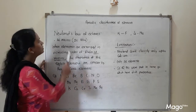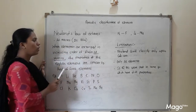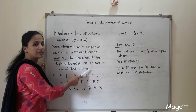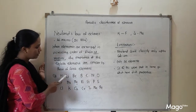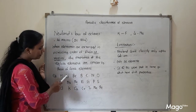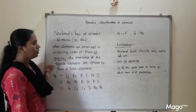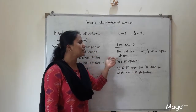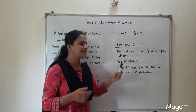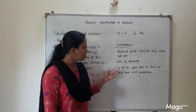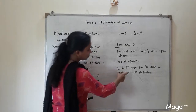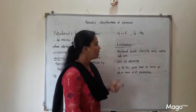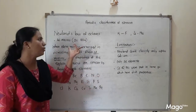The second limitation: there were only 56 elements present, and Newland couldn't arrange any further space in his table for elements that would be discovered later. A third limitation: to fit his table, Newland placed two elements in the same slot — for example, cobalt and nickel were put in the same group even though they have different properties. These are the limitations of Newland's law, which is why we no longer use it today.